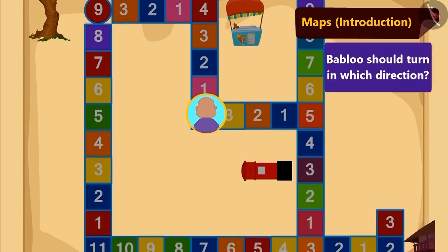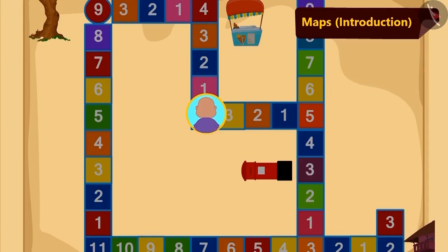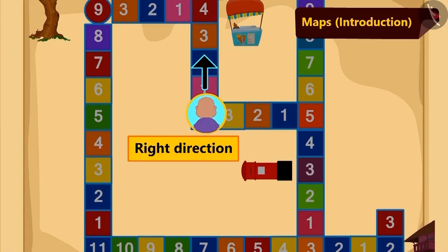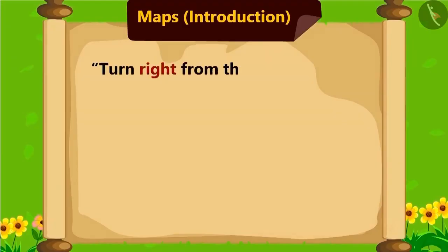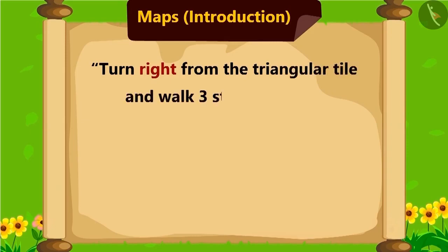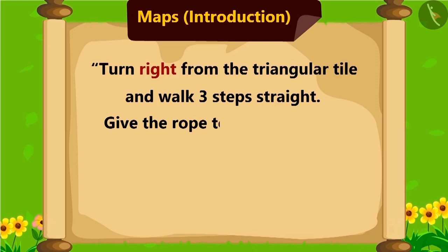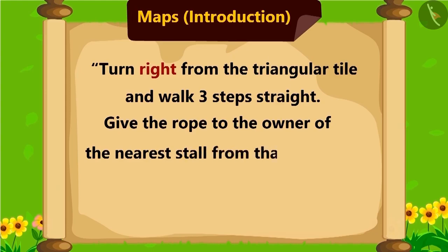Children, now you can tell which side Bablu should turn to move ahead on the map. Yes, Bablu should turn right now. Bablu further read the instructions: turn right from the triangular tile and walk straight three steps. The stall which is nearest to the tile — he will give the rope to the owner of the stall.